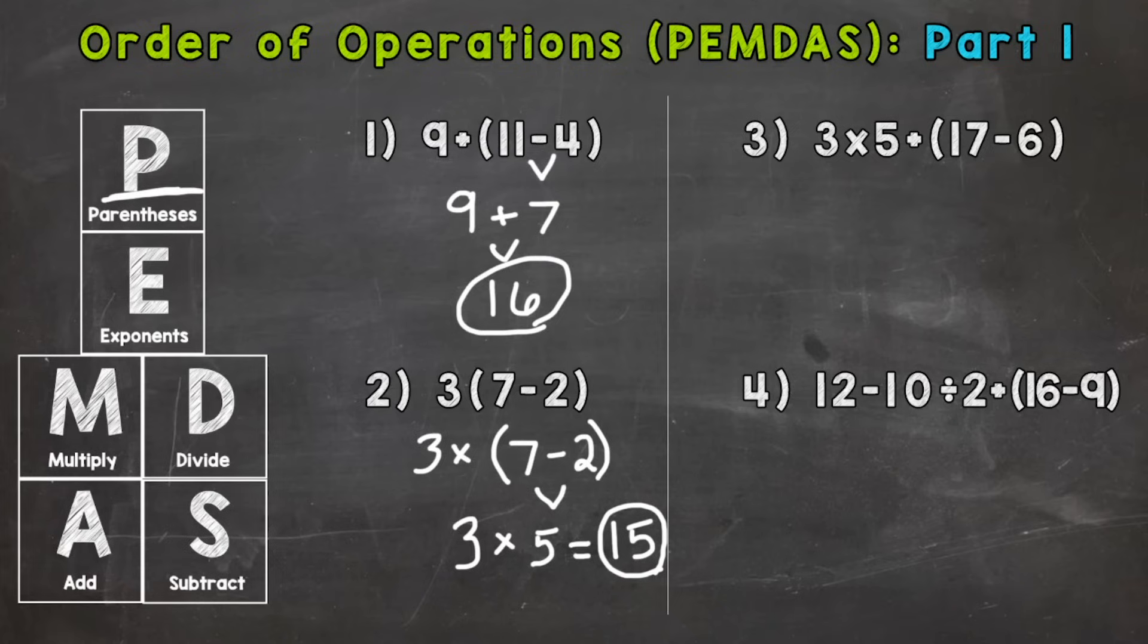So number three let's go through our steps. Any parentheses? Yes, so that's what we need to do first. Seventeen minus six is eleven. Let's bring down everything we did not use. So now we have multiplication and addition.